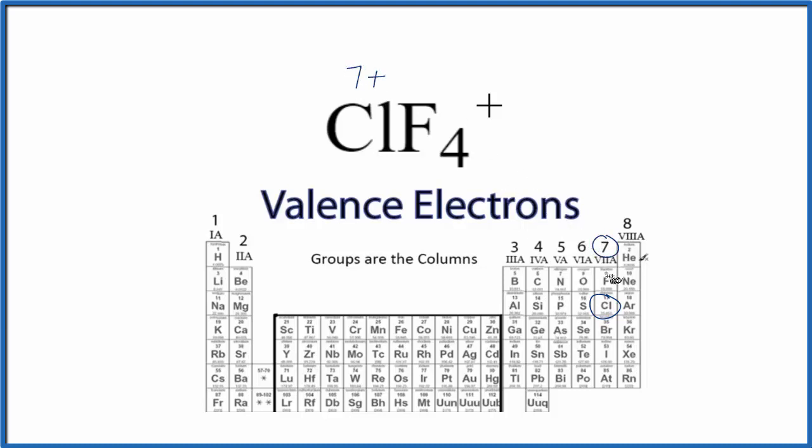Fluorine, that's in the same group. It's right above chlorine there. So we have 7 valence electrons for each fluorine, but we have 4 of them.